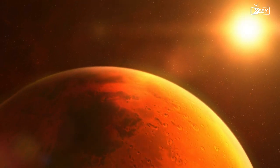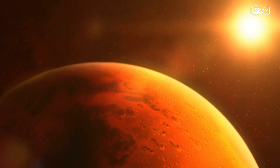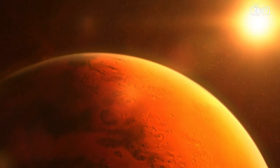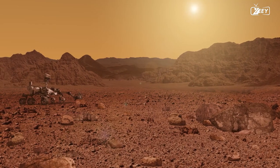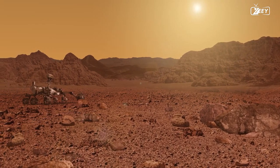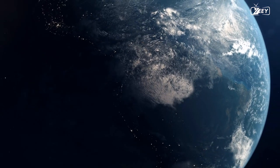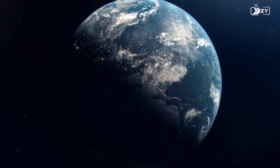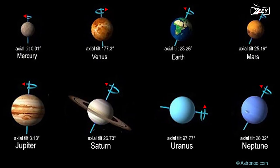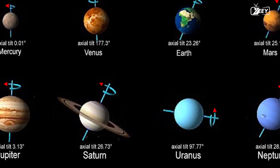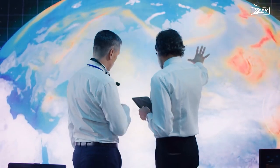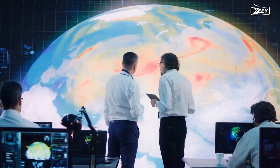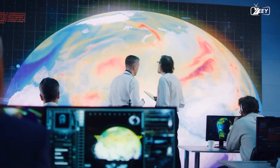Simply put, when a planet is in its orbit with its north pole facing the sun, the summer solstice is when the sun reaches its highest point on the horizon and the winter solstice is when it reaches its lowest point. Several factors influence the creation of seasons on a planet, the most important of which, all else being equal, is the tilt of the planet's axis of rotation. The 23.5-degree tilt of the Earth is the primary cause of the climatic changes we see between summer and winter.